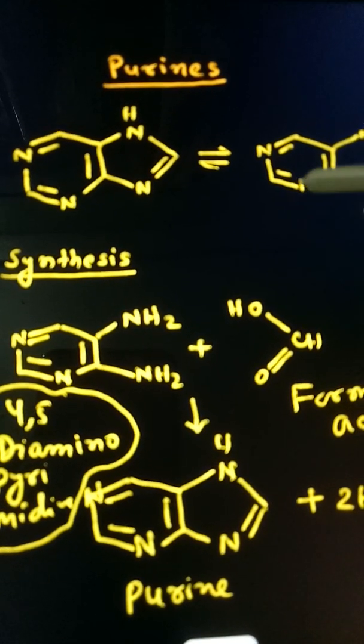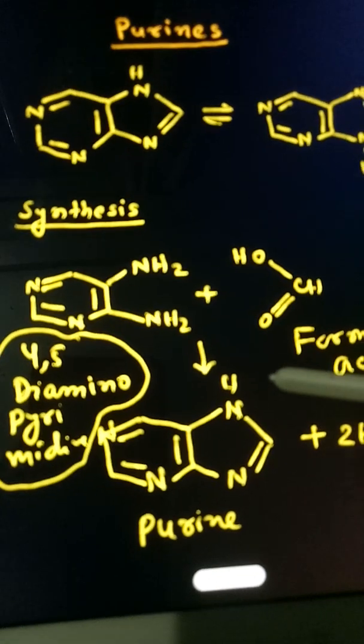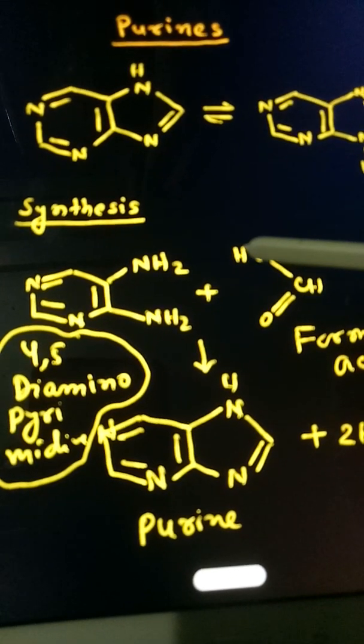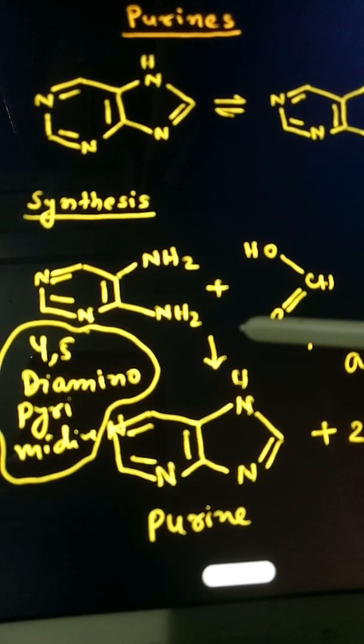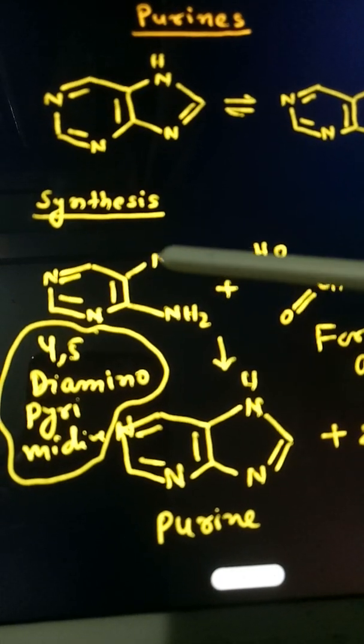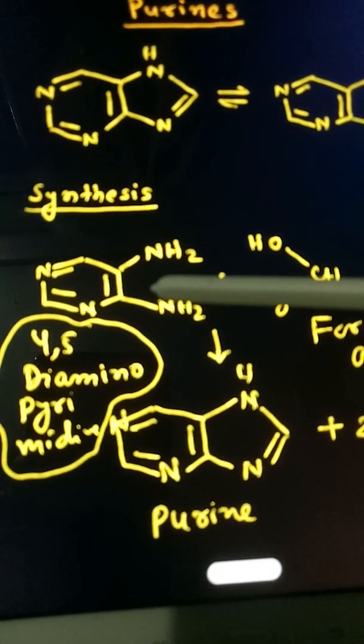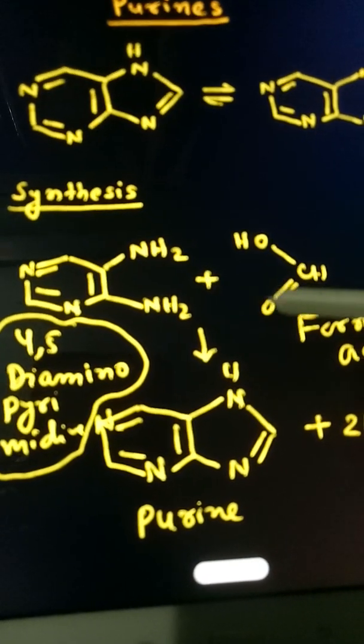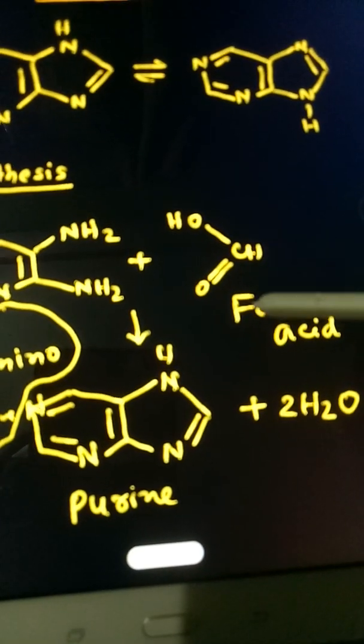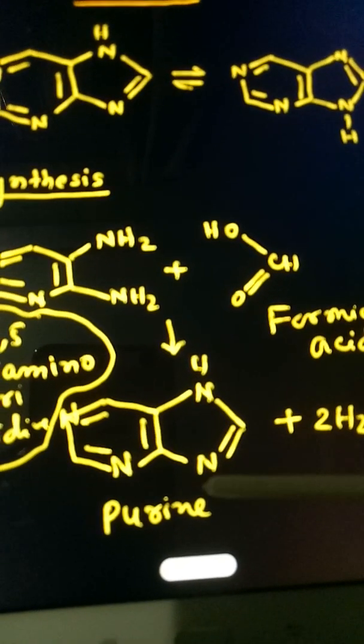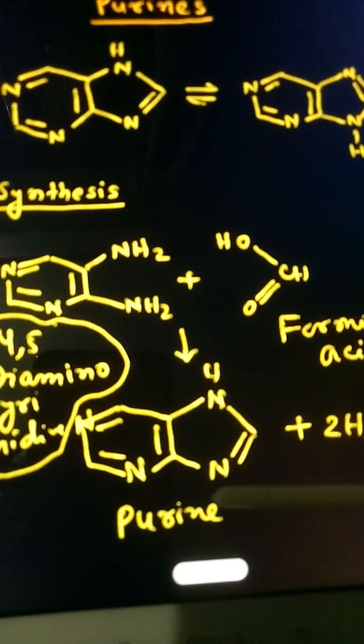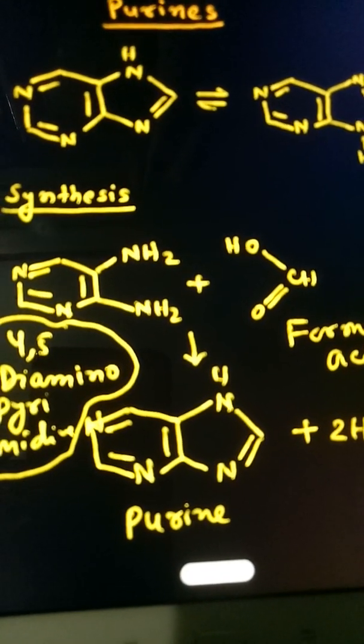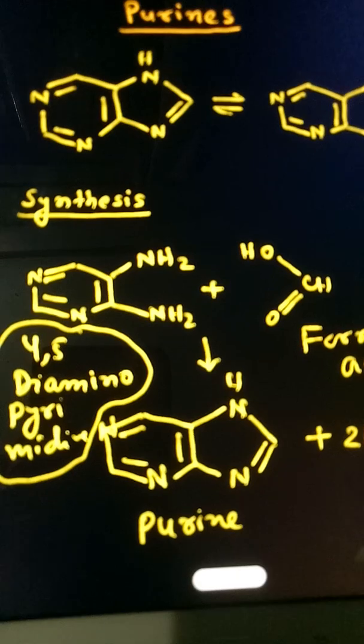So how do you synthesize purines? Because it is not found in nature, you can synthesize it with the help of 4,5-diaminopyrimidine reacting with formic acid, forming purine. In the next video I will explain about uric acid, which is very important.